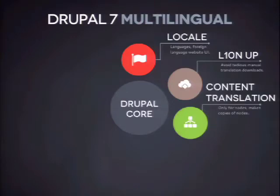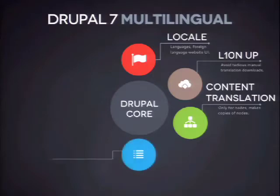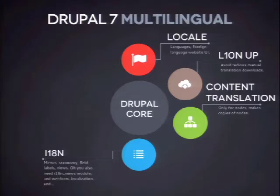Then there's the content translation core module, which creates copies of your nodes so you can translate them, but it only works for nodes. So if you use Drupal Commerce or want to translate taxonomy terms or menus, that's not supported. Plugging in the holes, we have the i18n module, which lets you translate menus, taxonomy terms, contact forms, and to some degree views — but it depends on a lot of other modules. If you want to do all that, i18n has about 20 sub-modules, then it requires variable module, variable realm module, variable translation module, and all kinds of other modules. Now we're at about 20 modules.